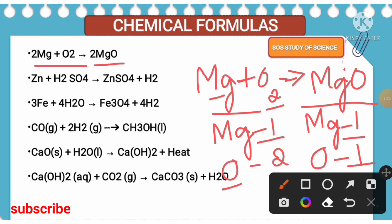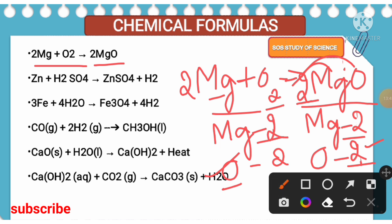To balance the oxygen, write two in front of MgO. This two is now applicable for both Mg and also O — two into Mg is two Mg, two into O is two O. Now oxygen atoms are balanced. But magnesium atoms have increased in the product side compared to the reactant side, so it is time to increase the number of magnesium atoms in the reactant side as well. Write two in front of Mg to balance Mg — two into Mg, you get two Mg. Now both the reactants and products are balanced by having the same number of atoms. This is applicable for all chemical equations; whatever equation you balance, it is a trial and error method using the same approach.